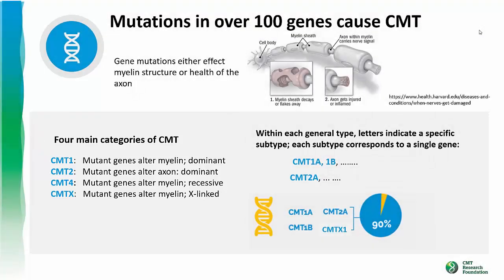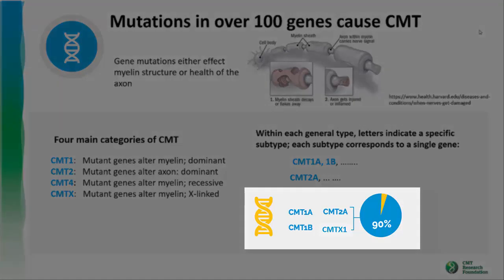Within each category there are multiple subtypes designated by letters — thus CMT 1A or 1B, CMT 2A, 2B, etc. Each subtype corresponds to one specific mutated gene. Four genes make up 90% of all CMT types: CMT 1A, 1B, 2A, and X1. Of these, CMT 1A is the most common and is responsible for 60% of cases.